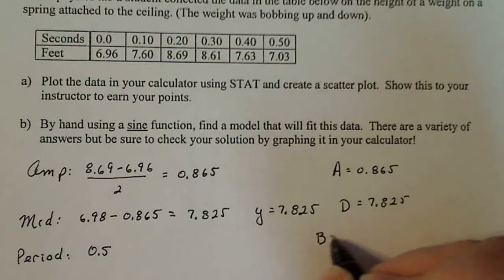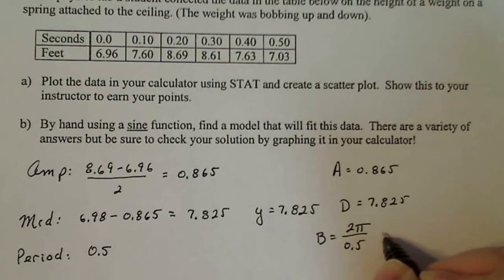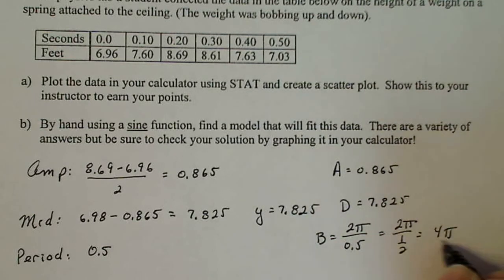And my b value always turns out to be 2 pi over the period. And if you simplify this properly, that's 2 pi over 1 half, which simplifies to 4 pi. That's not my period. That's the value for b.